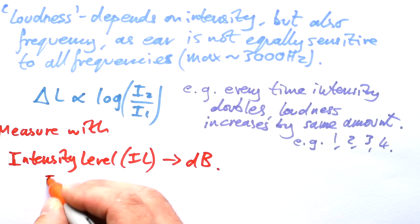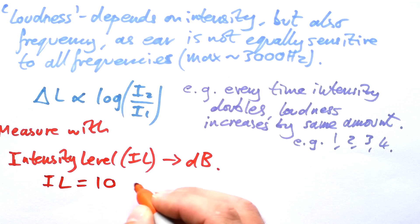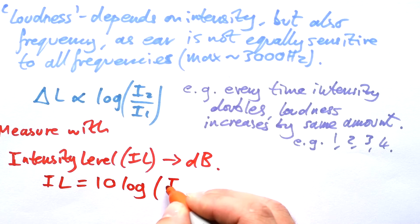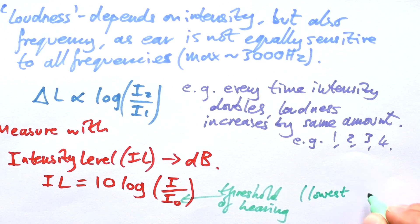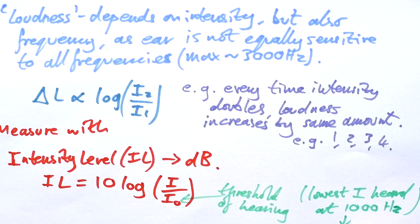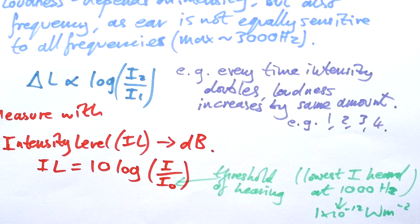Well it's based off the threshold of human hearing. So intensity level in decibels, because we have that 10 in front, is equal to 10 log of the intensity of that sound divided by I0. Now what is I0? Well that is the threshold of hearing, and that is the lowest intensity that can be heard generally by the human ear at 1000 hertz, and that's about 1 times 10 to the minus 12 watts per meter squared. So this intensity level is always measured relative to the lowest intensity we can hear.